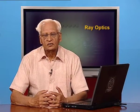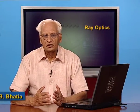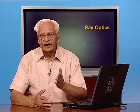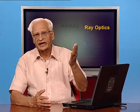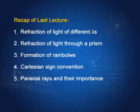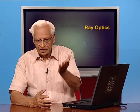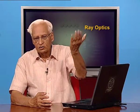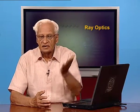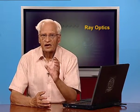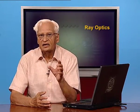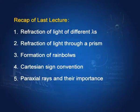In the last lecture, we studied the reflection of light of different colors and found that they refract to different extents. We also saw the reflection of light through a prism and found that there is a certain angle — the minimum angle of deviation — which occurs as we keep changing the incident angle. This angle of minimum deviation is important because it helps us understand the formation of rainbows.